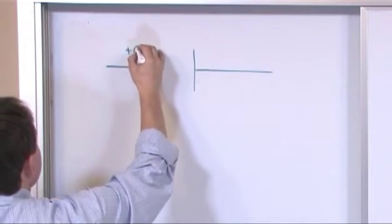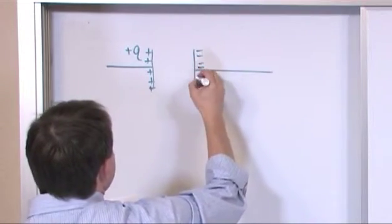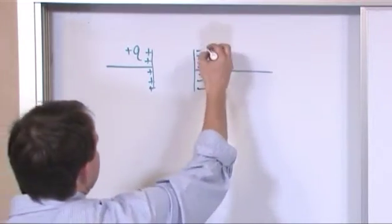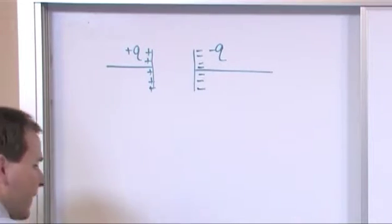So this charge on this plate is positive Q. And then over here, maybe you have your negative charges because they always have to be equal and opposite. So this will be negative Q over here. That's just what we talked about in terms of a capacitor.